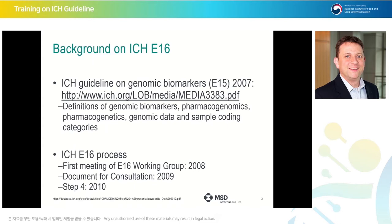First, background on ICH E16. The ICH Guideline on Genomic Biomarkers, ICH E15, was generated in 2007. Here, definitions of genomic biomarkers, pharmacogenomics, pharmacogenetics, genomic data, and sample coding categories were provided.